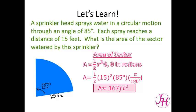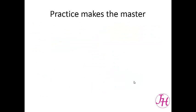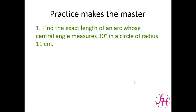And that is how you find the length of an arc and the area of a sector. So you try a couple: find the exact length of an arc whose central angle measures 30 degrees in a circle of radius 11 centimeters, and then find the area of the sector created by that arc.